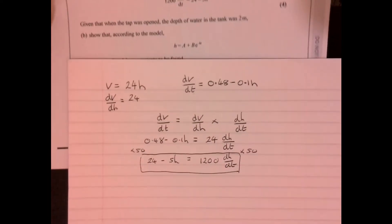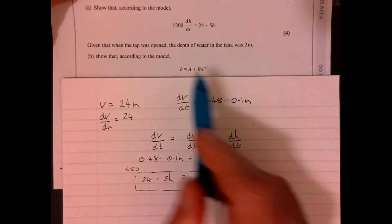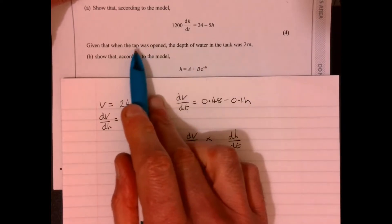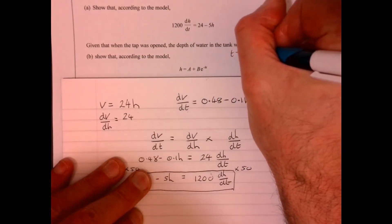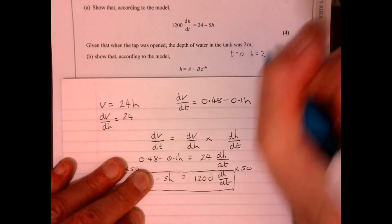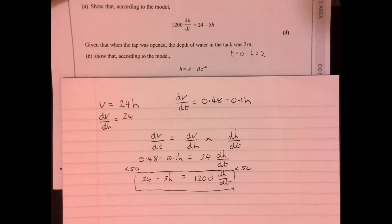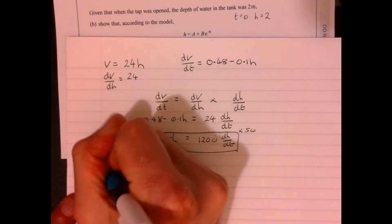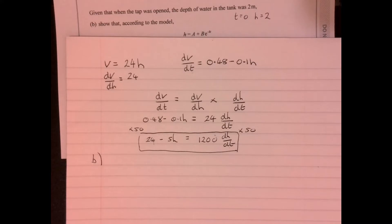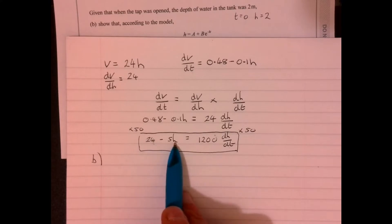Now part B. Part B says show that according to the model we get this, but it also tells me given that when the tap was opened, the depth of the water in the tank was 2 metres. So when time is 0, the height is 2. So how are we now going to make use of this? This is differential equations. So what we actually need to do on this part is going to end up doing some integration.